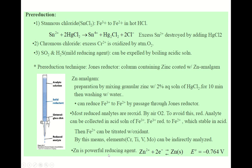There are also cases where you need pre-reduction before titration. For example, ferric ion may need to be reduced to ferrous ion using tin(II) chloride (SnCl₂) in hot HCl. Excess Sn²⁺ ion can then be destroyed by adding mercury(II) chloride (HgCl₂).